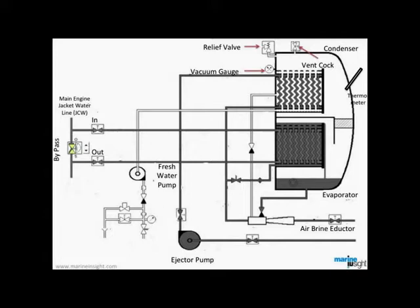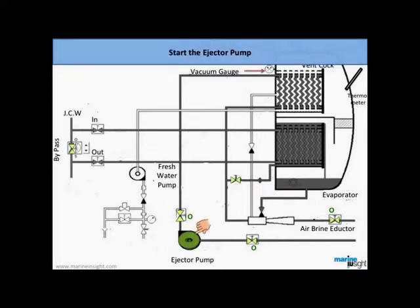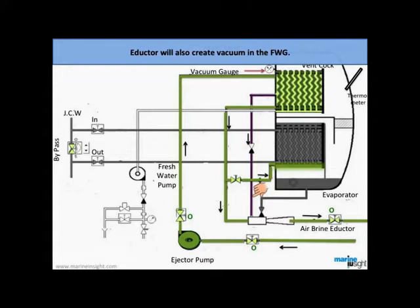Open ejector pump line discharge and suction valves. Open the feed water valve to freshwater generator evaporator. Start the ejector pump. Water will pass through the condenser and air brine eductor. Ejector pump also supplies feed water to the evaporator, which is then converted into freshwater. Then the eductor will also create necessary vacuum in the freshwater generator.